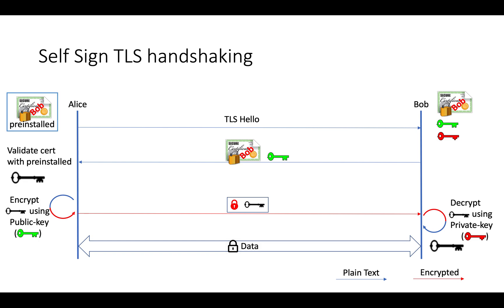Suppose Bob had previously provided a certificate to Alice with certain valid dates, but somehow Bob's system got crashed or was hacked, and Bob had to regenerate a new certificate. In that case, it is better for Alice that every time she establishes a new TLS connection, she requests the latest certificate. If the received certificate does not match the pre-installed one, she drops the connection.